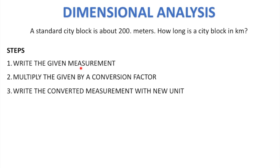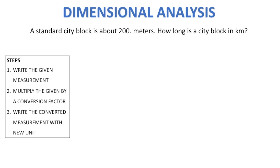First, write the given measurement. Then, multiply the given measurement by a conversion factor that includes the given unit and the new unit. And then finally, write the converted measurement with the new unit. So step one, write the given measurement. That's 200 meters.